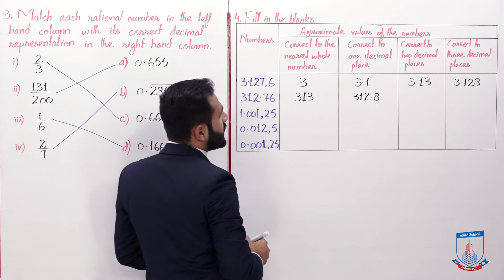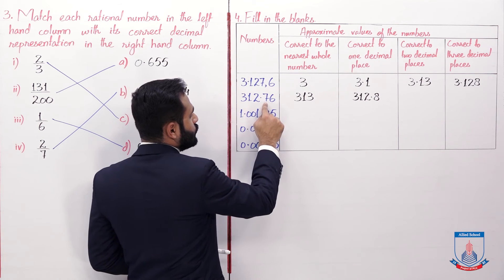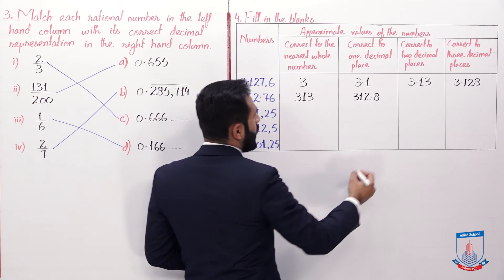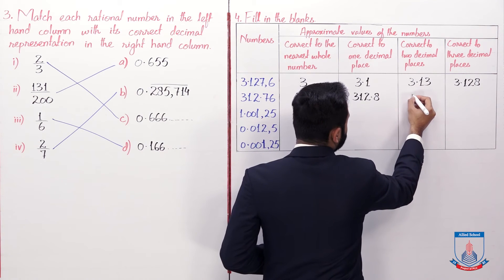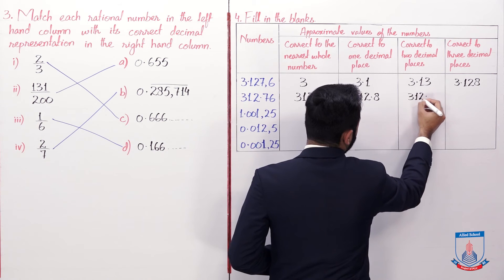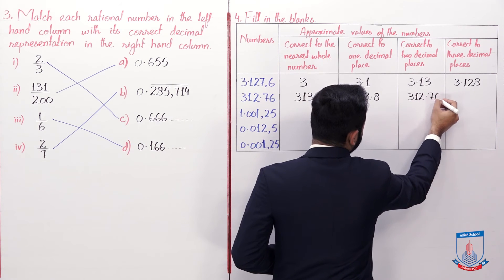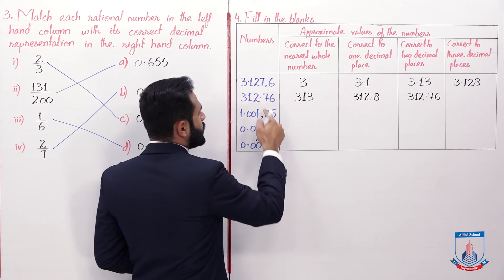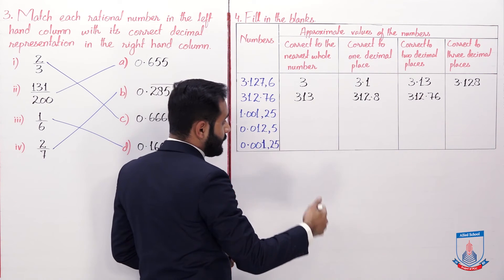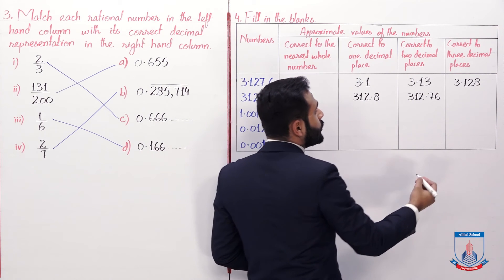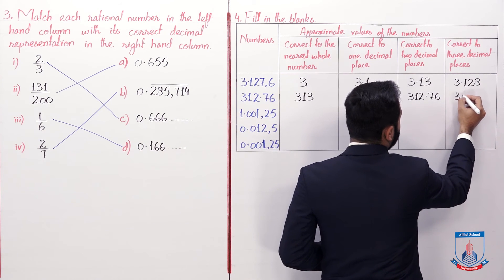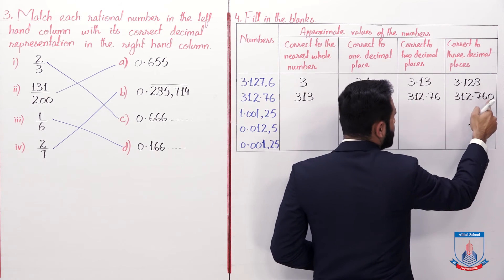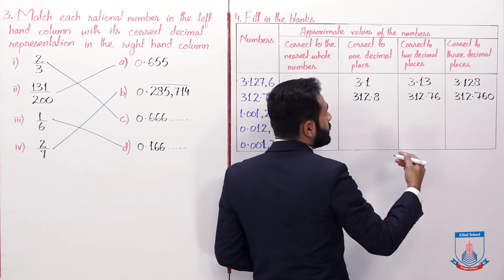For two decimal places of 312.76: there is no digit after 76, so write it as it is — 312.76. For three decimal places, the third decimal place doesn't exist, so we write 312.760 — place a zero in the third decimal position.